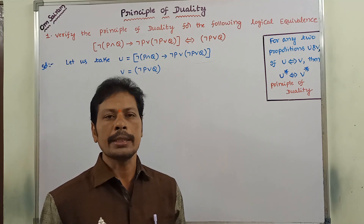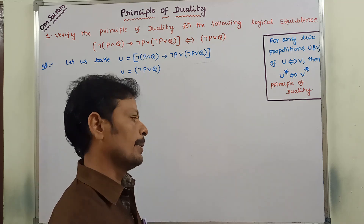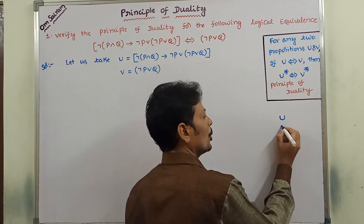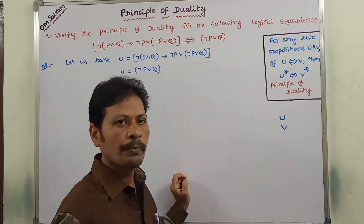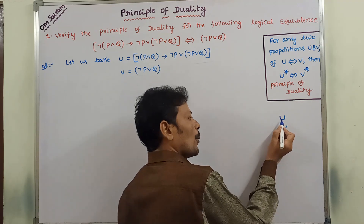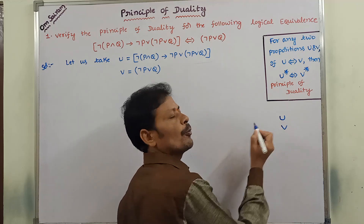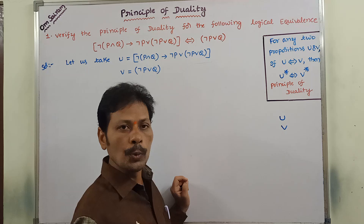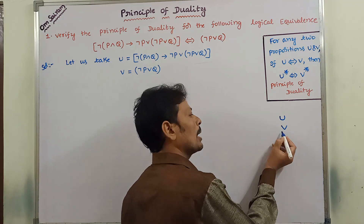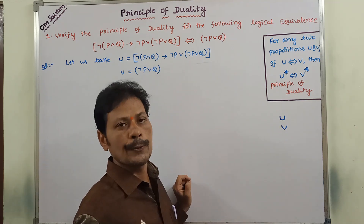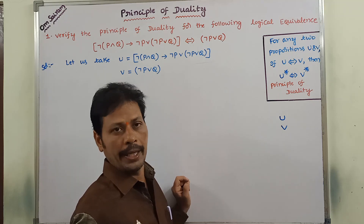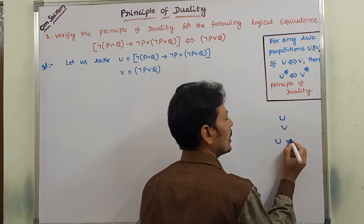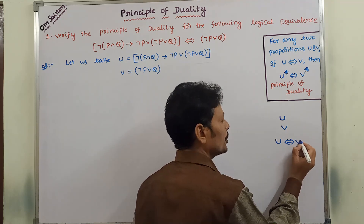First of all, what is the principle of duality? Let us consider two compound propositions, U and V. Suppose whatever the truth values that are produced by the compound proposition U, the same truth values are also produced by the compound proposition V. Then we can say that U is logically equivalent to V.